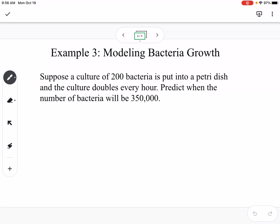Example three says modeling bacteria growth. Suppose a culture of 200 bacteria is put into a petri dish and the culture doubles every hour. Predict when the number of bacteria will be 350,000. If we write our equation, it'd be P of T equals 200 times 2 to the T, and we're going to say T is hours.